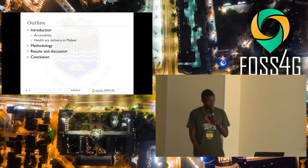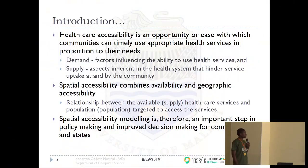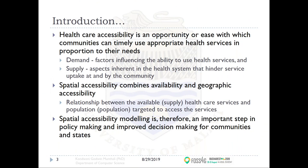I'll go straight into healthcare accessibility, which is the opportunity or ease with which communities can timely use appropriate health services in proportion to their needs. There are push-pull factors around this, including demand and supply. Spatial accessibility combines both availability and geographic access, and the relationship between available healthcare services and the population targeted to access that service.